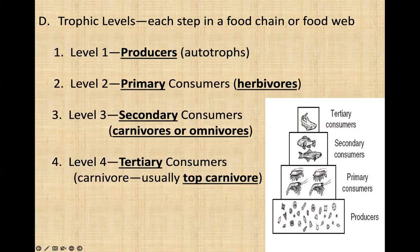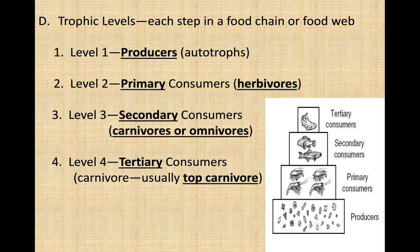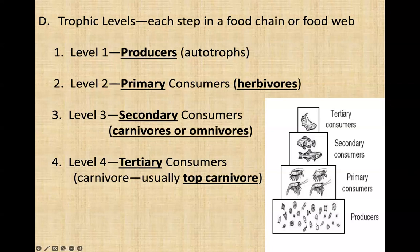Then we have our primary consumers, which are going to be our herbivores. Then we have our secondary consumers — these are carnivores and omnivores — who will eat primary consumers. Primary consumers eat producers. The fourth trophic level consists of tertiary consumers, which are typically top carnivores. These are our trophic levels, and we understand that there's energy transfer from one trophic level to the next. Each trophic level becomes a source of food for the trophic level below it.